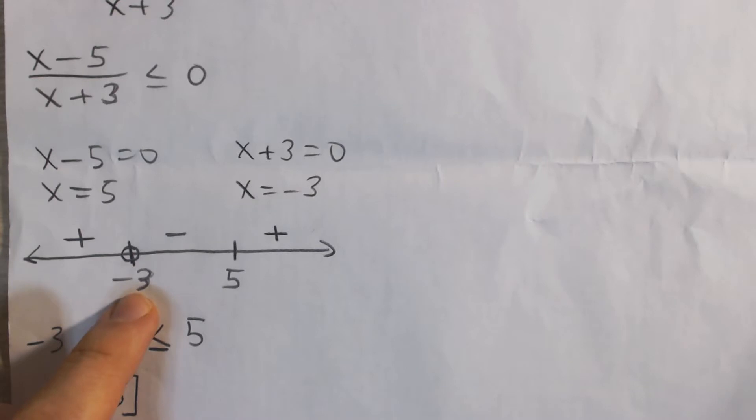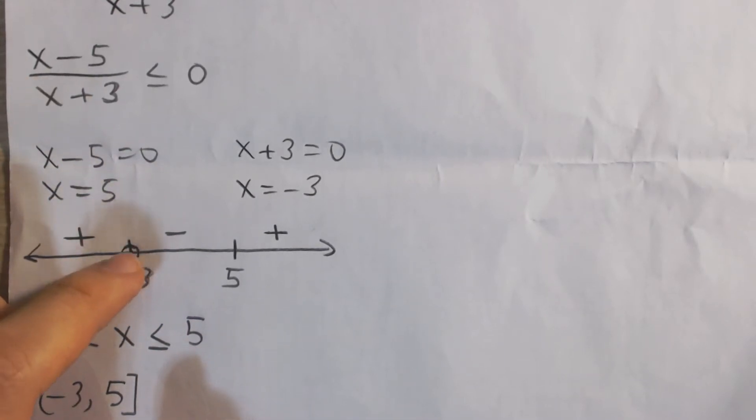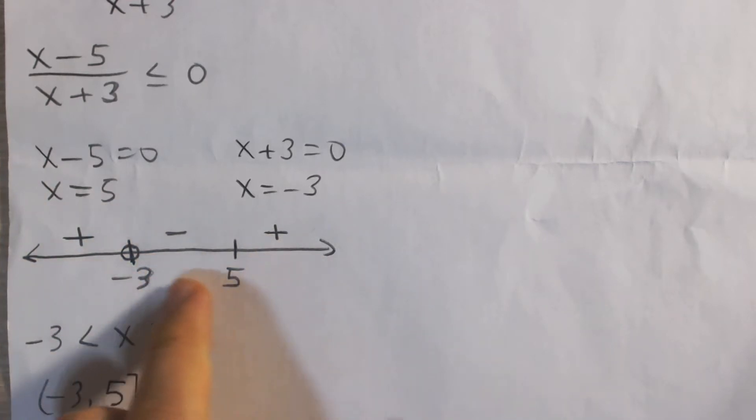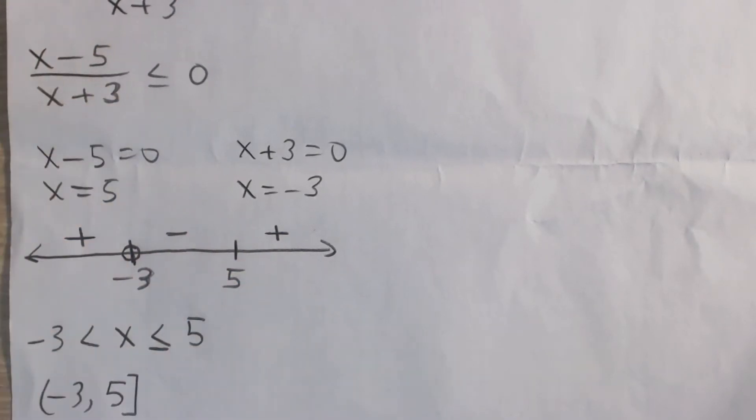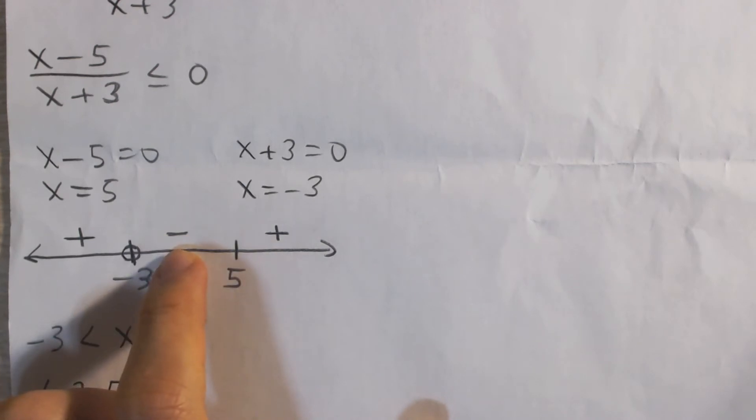Keep in mind that at negative 3 this expression is not defined, so I don't know if you've seen this notation, but we have an open circle to say it's not defined at that point. In between negative 3 and 5, let's say I test 0 as an easy point, we'll get negative 5 divided by positive 3. That's a negative number, and so in this entire region we're negative.